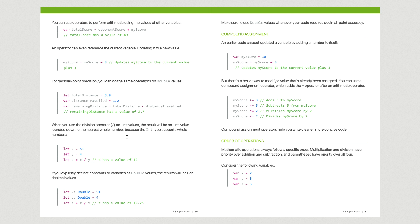Go ahead and open up page 36 of the book. About halfway down it says when you use the division operator — the forward slash — on int values, which stands for integer. If you were going to use a whole number, that's an integer. The example is: 'let x = 51, let y = 4, let z = x / y.' That part will not work because you're getting into a problem with decimals — if the outcome is a decimal, it's not going to work unless you set it up as a double. On the compound side: 'var myScore = 10, myScore = myScore + 3' — that's going to update because it's a variable. Nice and easy.